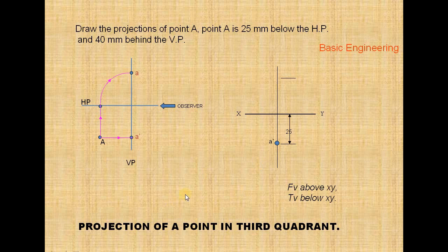A-dash represents the front view of point A in third angle projection. You get the front view below the XY line. This distance behind — when you rotate, you get the behind distance here. From XY to A is 40 mm. You get the 40 mm like that. Now we indicate the top view.